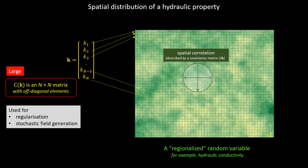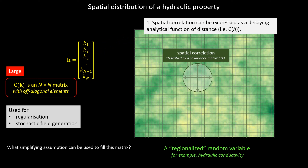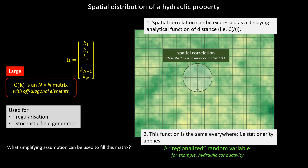We've got to figure out a simplifying way of generating the elements of this N by N matrix. The first simplification is to assume that spatial correlation can be described by an analytical function that decays with distance. The second simplifying assumption is that this analytical function is the same throughout the model domain — this is the assumption of stationarity: whatever function I use to describe the decay of correlation with distance applies all through the model domain.